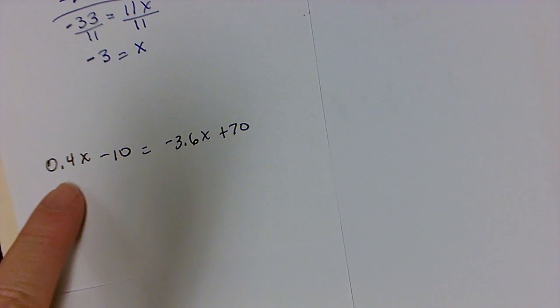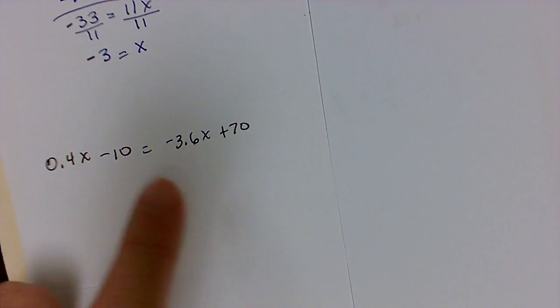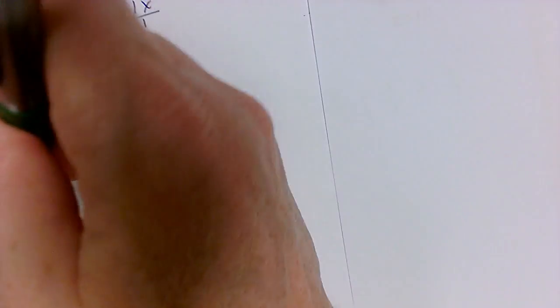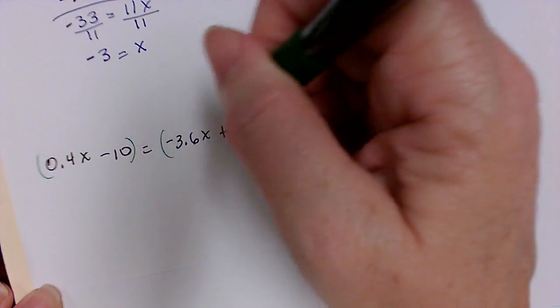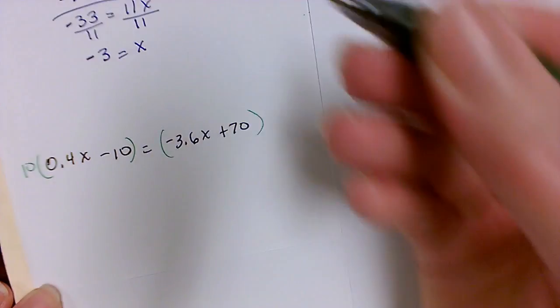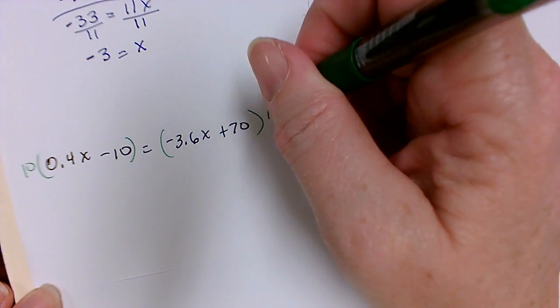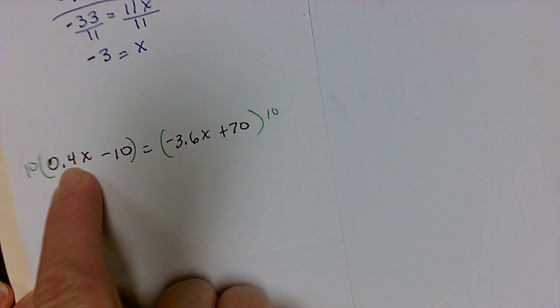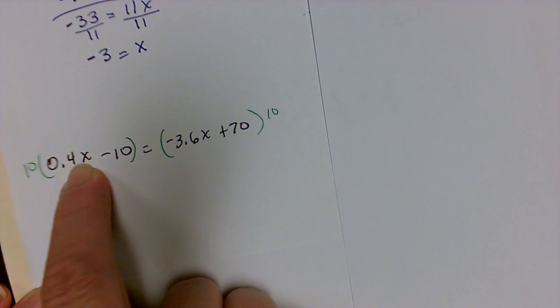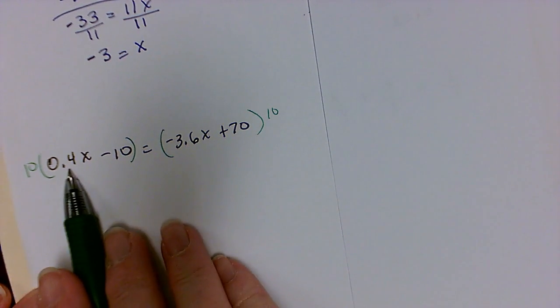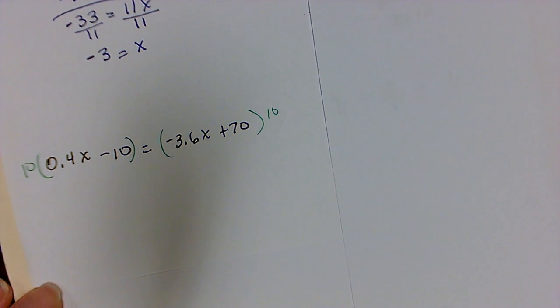But in this case, we do have an equal sign. So I'm going to clear both sides by multiplying them by 10. And the reason I'm multiplying both sides by 10 is because I have one decimal place after the decimal. So if I had two, like 0.43, I would multiply by 100 to clear the two spaces. But since I only have one on both sides, I'm going to do that.